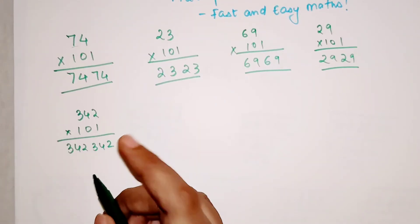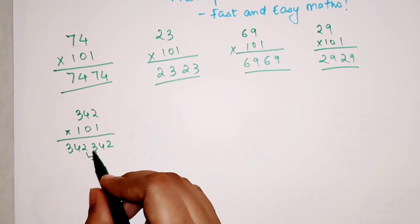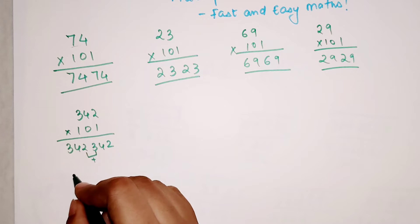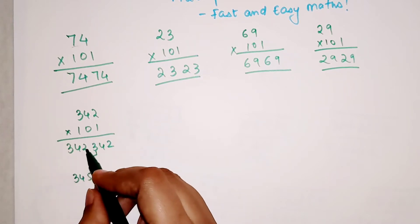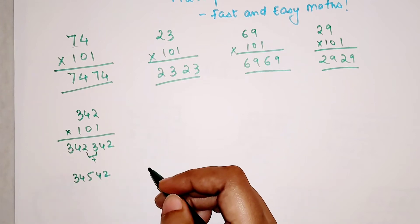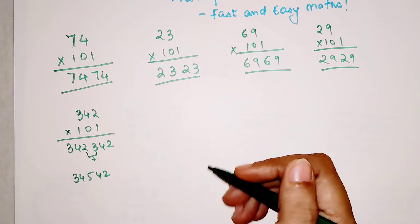But your final answer will have addition of these 2 digits. Means the center most 2 digits will get added. So your final answer will have 3, 4, 5, 4, 2. Why 5? Because 2 plus 3 gets you 5. I hope you are getting what I am trying to do.